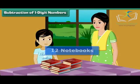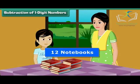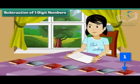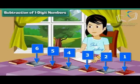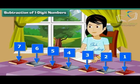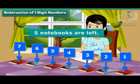Priya's mother bought her 12 mathematics notebooks. She has used up 7. How many notebooks are left? 12 minus 7 is equal to 5. 5 notebooks are left.